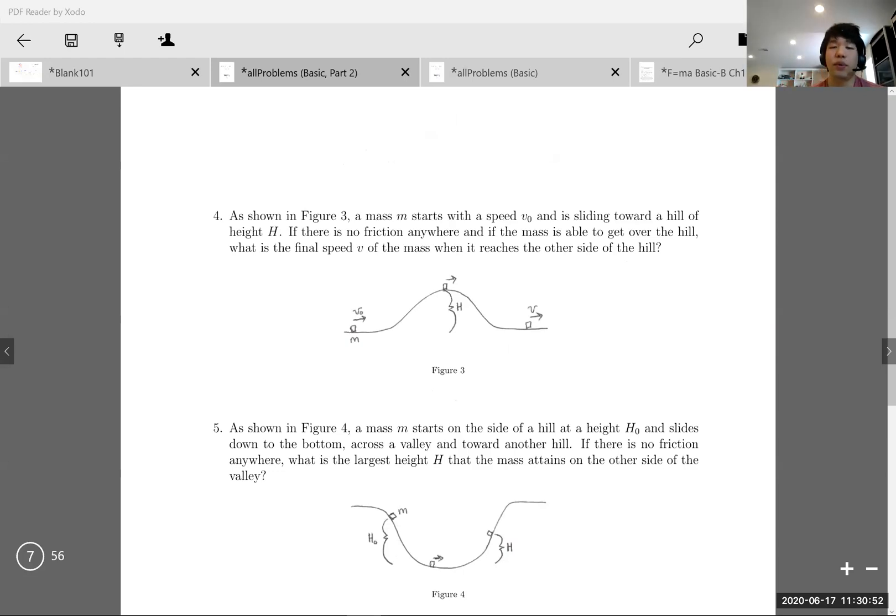I'm going to go over the next two problems right now. So as shown, we start with this height h. What's the final speed of this mass when it reaches the other side of the hill?